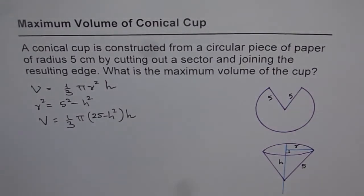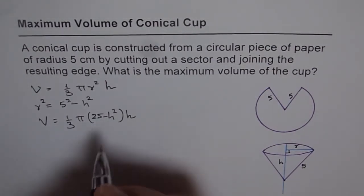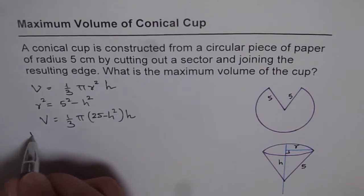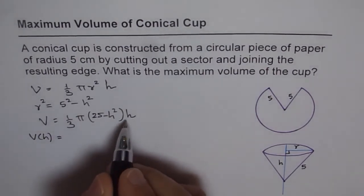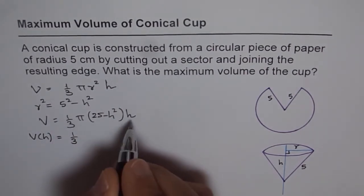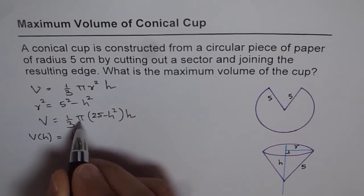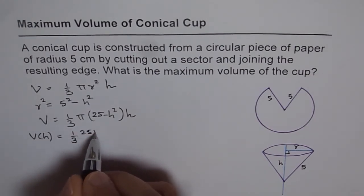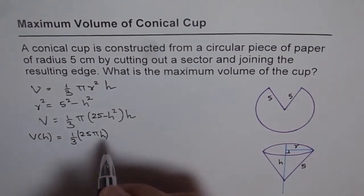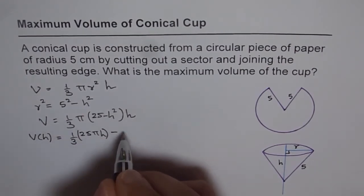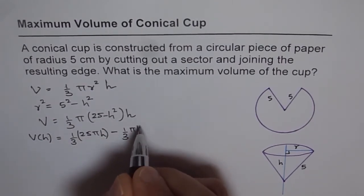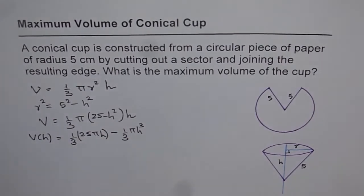So volume is equals to 1 by 3 pi, 5 square is 25, so I will write 25 minus h square times h. So that is the volume of our cone. Now we can simplify this and then write volume in terms of h. So we can just expand this out and then write down as 1 over 3 pi times h. So 25 pi h minus 1 over 3 pi h cube. So that is our expression of volume.